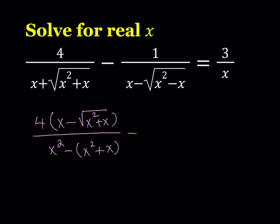The second expression will be multiplied by the conjugate of the denominator. Since the numerator is 1, I can just write that and multiply by the bottom, which gives me from difference of two squares, x squared minus the quantity x squared minus x. And this is equal to 3 over x.